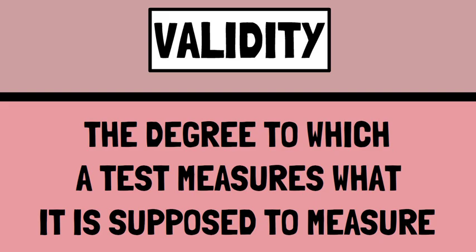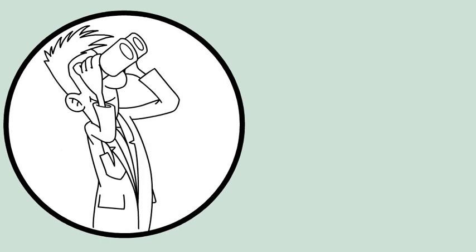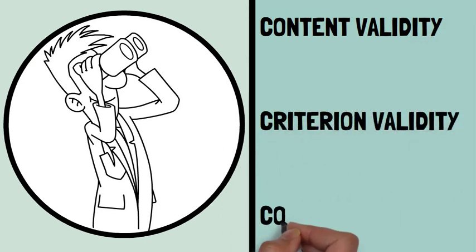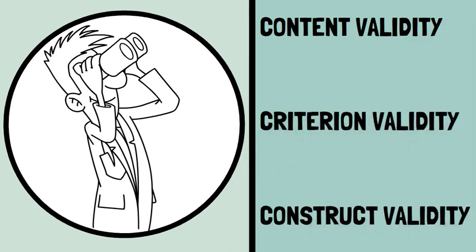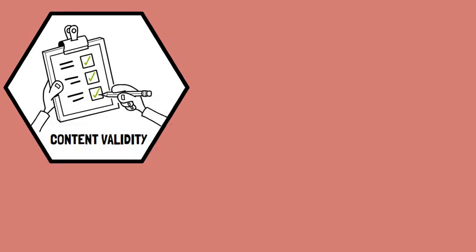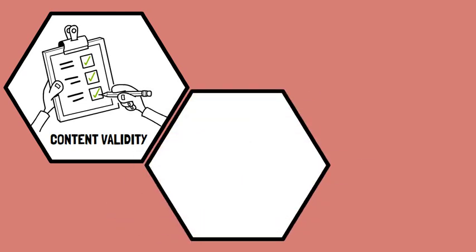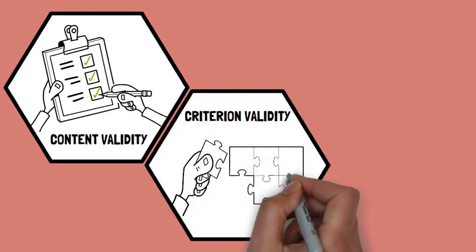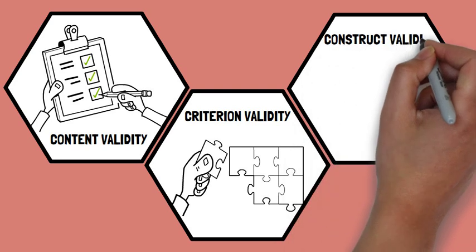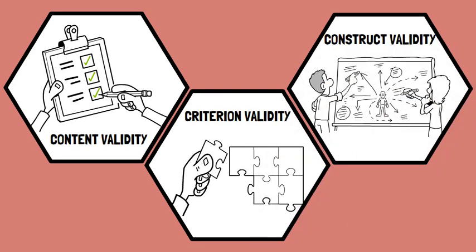Validity refers to the degree to which a test measures what it is supposed to measure. A test must be valid to ensure that the results accurately represent the construct being measured. There are different types of validity including content validity, criterion validity, and construct validity. Content validity refers to the degree to which the test adequately measures all aspects of the construct being measured. Criterion validity considers the degree to which the test correlates with other measures deemed to be valid, and construct validity refers to the extent to which a test accurately measures the theoretical construct of interest.